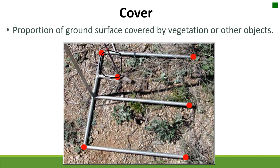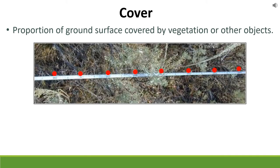Cover is another common measurement on rangelands — it's the proportion of the ground surface covered by vegetation or other objects, including rocks, moss, lichen, bare ground, and litter (any detached debris on the surface). Looking at a quadrat, you can estimate cover by plant species, life forms, or growth forms. If plants fill the whole quadrat, that's 100% cover; half the quadrat is 50%; about a tenth of the quadrat is roughly 10% cover.